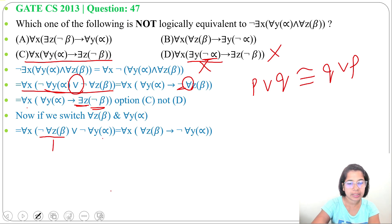Now let this is our P, for all Z beta, and negation of for all Y alpha is our Q. So it is in the format negation P or Q.